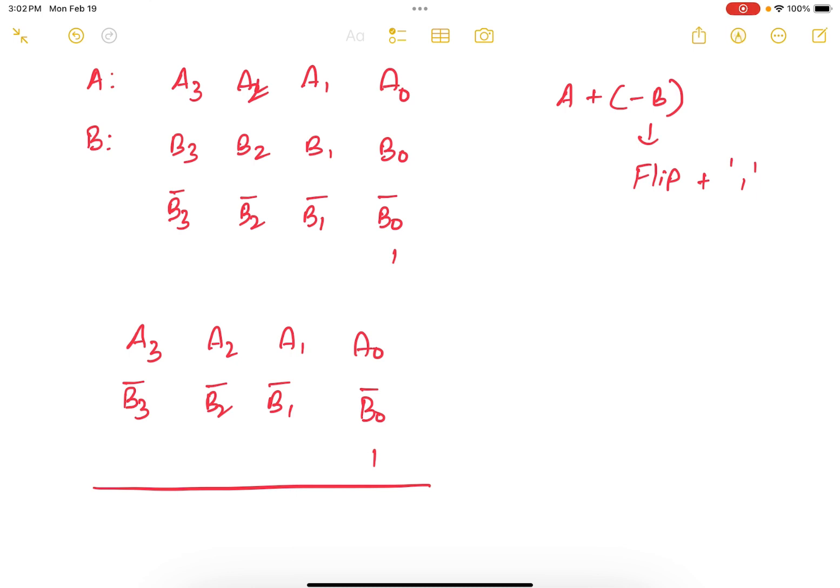Now if you look at this more closely, we need four NOT gates to invert B. So once that is done, you know that to add three things we need one full adder that generates a sum and a carry.